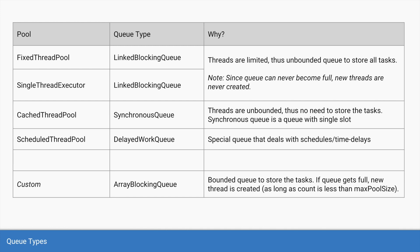In case of the fixed thread pool, we have a linked blocking queue — and it's the same for the single threaded executor. The reason it's a linked blocking queue and not an array blocking queue is because array blocking queue is limited in size, while the linked blocking queue can keep increasing in size. Since the thread pool itself is of limited size, we cannot limit the number of tasks — tasks can keep increasing and we need an unbounded storage area, which is why it is a linked blocking queue.